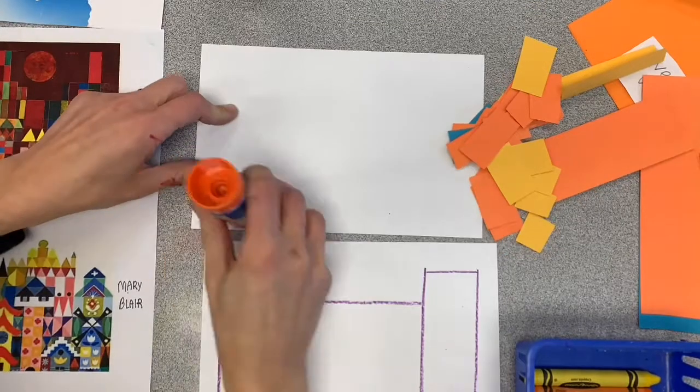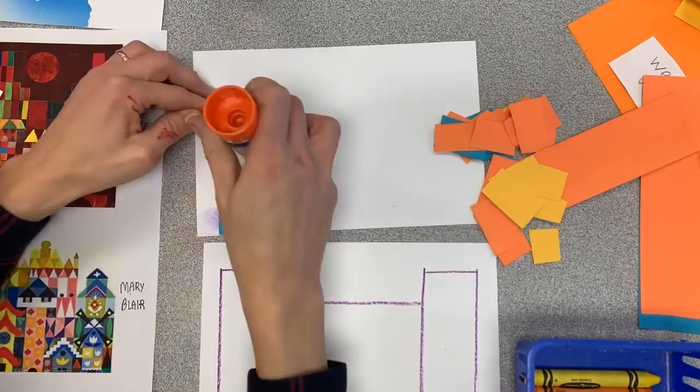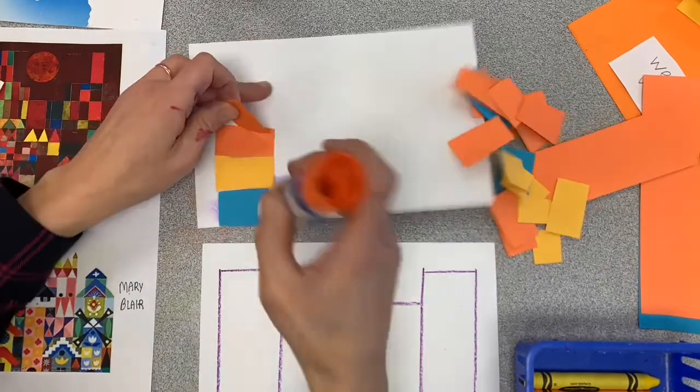Back to our collage. I recommend putting glue on your paper and then just start building your castle just like you would build with blocks or Legos.